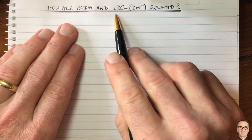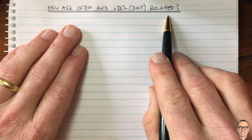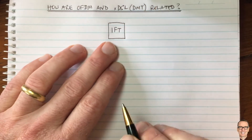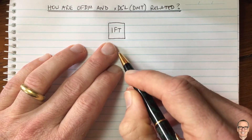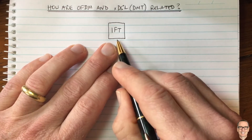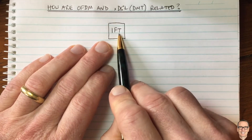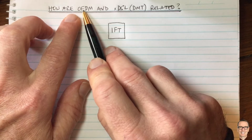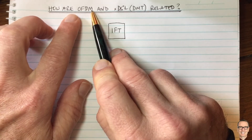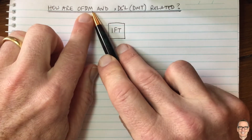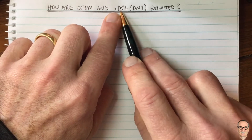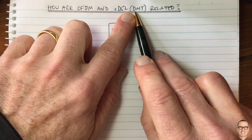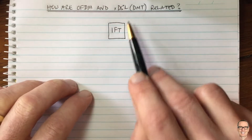How are OFDM and xDSL or DMT related? They both use the inverse Fourier transform in the transmitter and the Fourier transform in the receiver. OFDM stands for orthogonal frequency division multiplexing, mostly discussed in wireless contexts, while DSL technologies use a version called discrete multi-tone (DMT), but essentially it's the same concept.